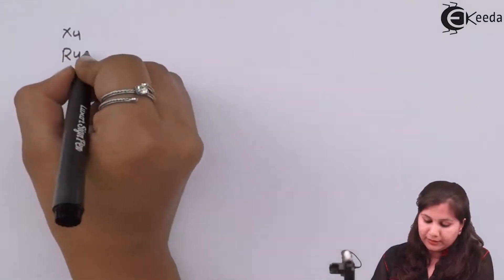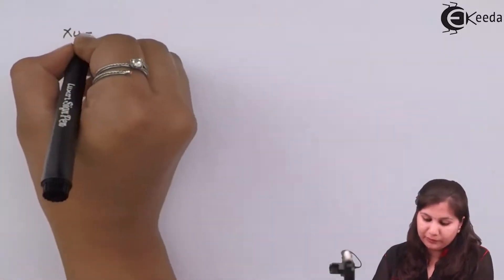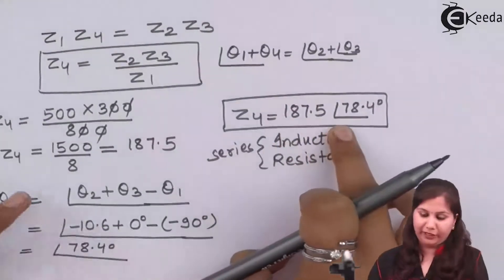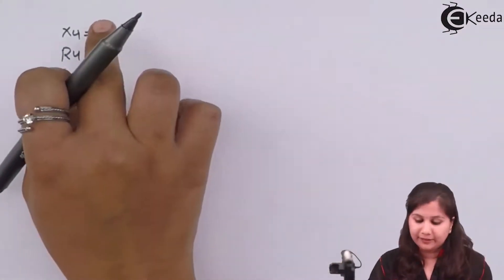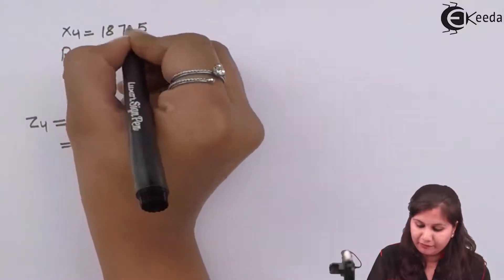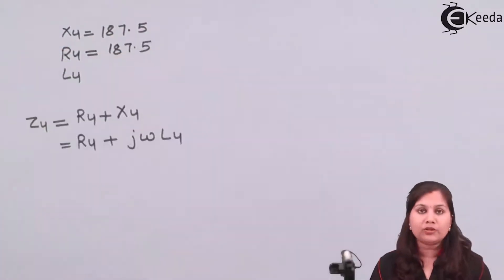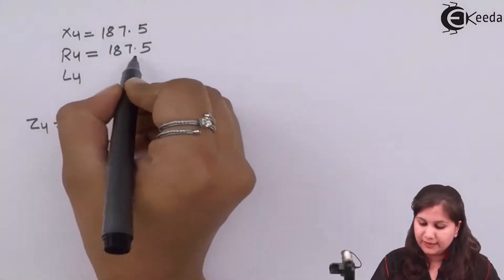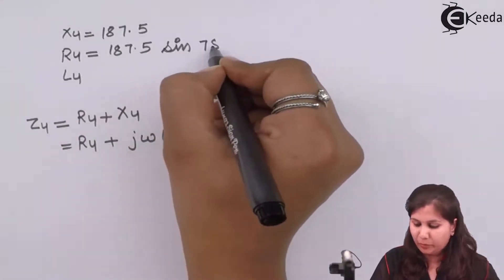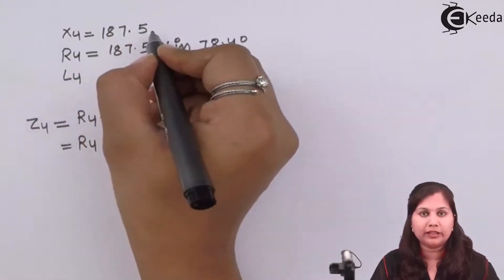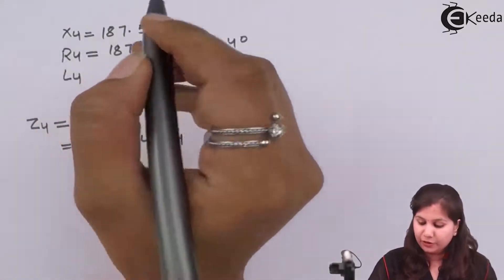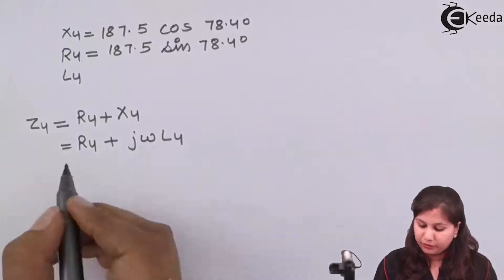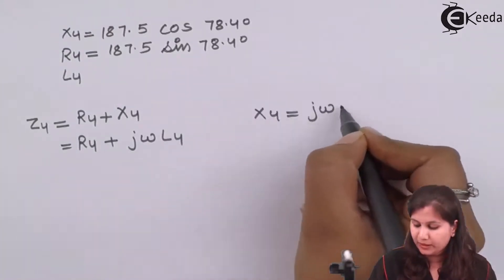We will now calculate R4 and X4 (inductive reactance). The magnitude is 187.5 for both components, but the sine and cosine components differ. R4 = 187.5 × sin(78.4°) and X4 (inductive reactance) = 187.5 × cos(78.4°).